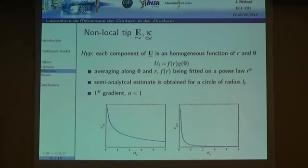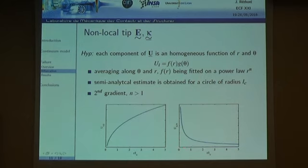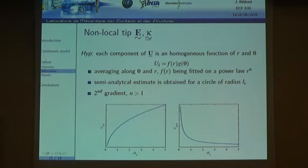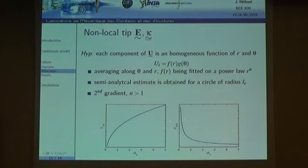For classical elasticity the displacement exponent is less than one, so both strain and its gradient are singular at the crack tip. But in gradient elasticity the strain singularity is cancelled — strain goes to zero at the crack tip while the gradient of strain remains singular. Depending on the distance at which these quantities are evaluated, the result is strongly influenced: too close to the tip, the gradient of strain dominates; too far, the strain dominates.